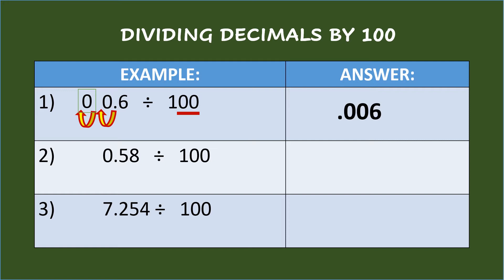Second example: fifty-eight hundredths divided by one hundred. The divisor has two zeros, so move the decimal point of the dividend to the left twice and add a zero to fill in the vacant place value. So the answer is fifty-eight ten-thousandths.